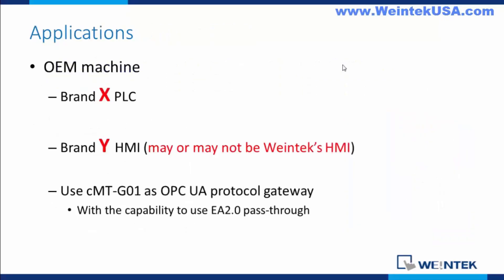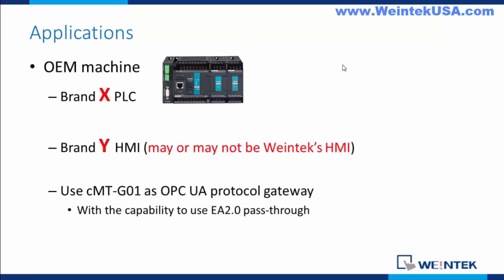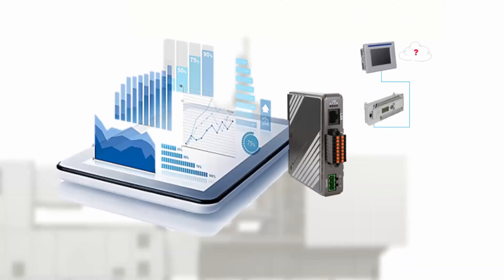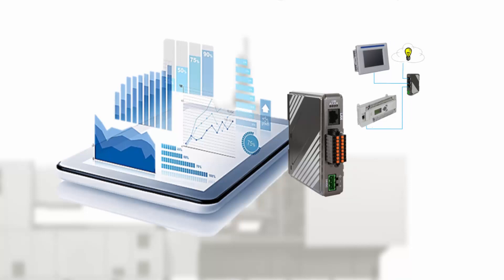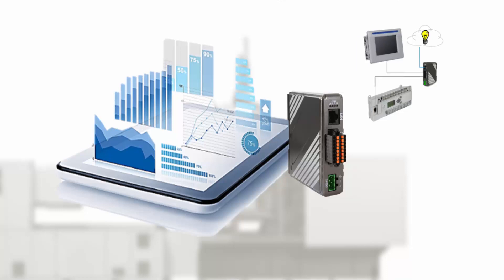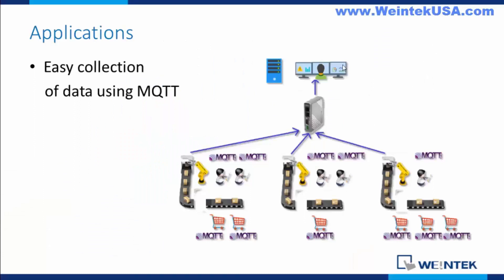A couple of scenarios where these may come in handy. Let's say you need to establish communications between a brand X PLC and a brand Y HMI — it may or may not be a WinTech solution. You can use the CMT G0 as an OPC UA protocol gateway. You have your Easy Access 2.0 pass-through capability to communicate with those non-WinTech devices and their native software.